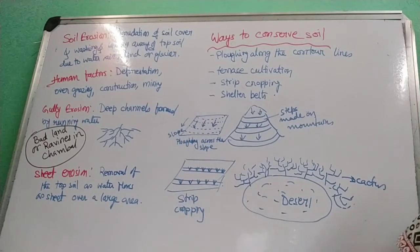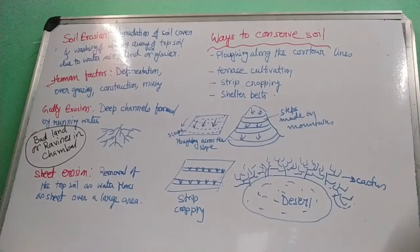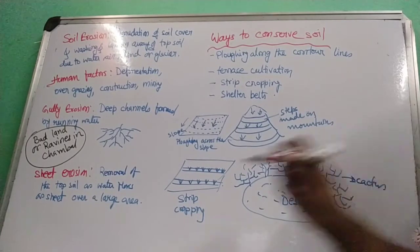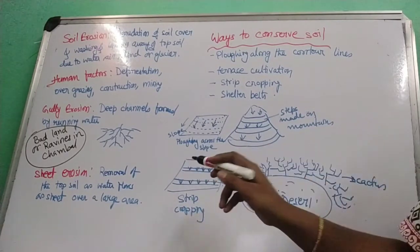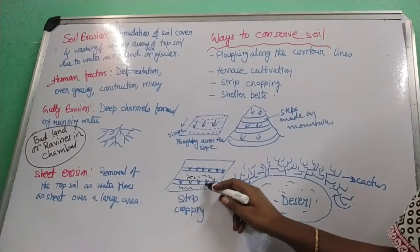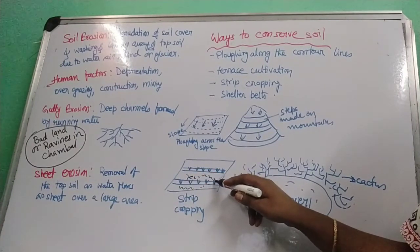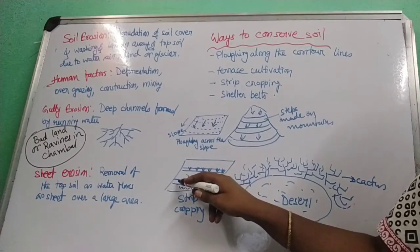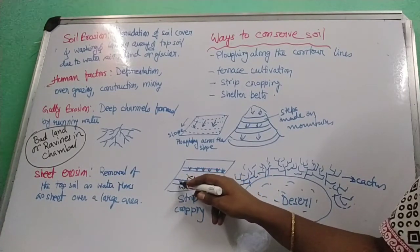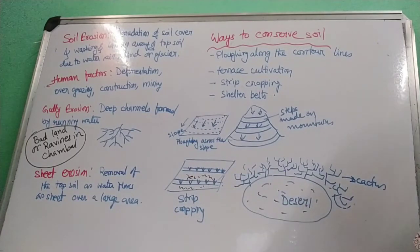The second method is strip cropping. In a plot of land, crops are grown in strips, and in between, grass is grown in the unused strips. The grass holds the soil tightly, preventing erosion. This is known as strip cropping.